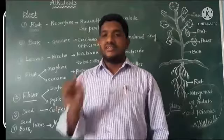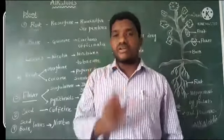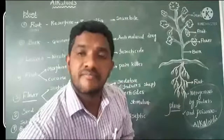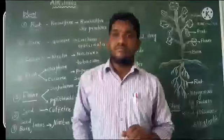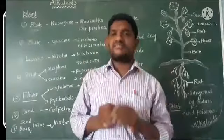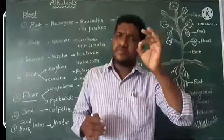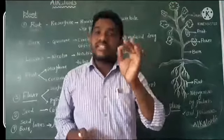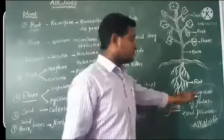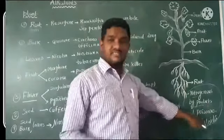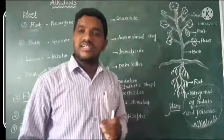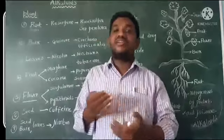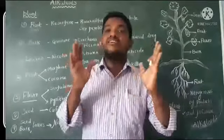The next concept is alkaloids. Alkaloids are nitrogenous byproducts that are very poisonous. Different kinds of alkaloids exist in the various parts of plants.